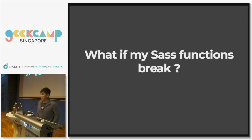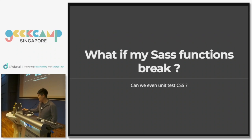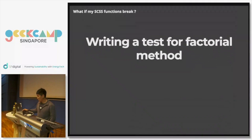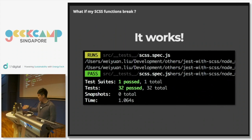Along the way of preparing for this presentation, my sine function broke, and I started thinking: what if my SASS functions break in the future? Someone can come in and change the code and cause it to break. Is there a way to do unit testing for CSS or SASS? There's a library called True by Oddbird. You can use it to complement your testing suite — for example, if you're using Jest to test your JavaScript code, you can use it together to test your SASS code. I used this to test my factorial function, and you can integrate it with Jest as the test runner to get the testing results you need.